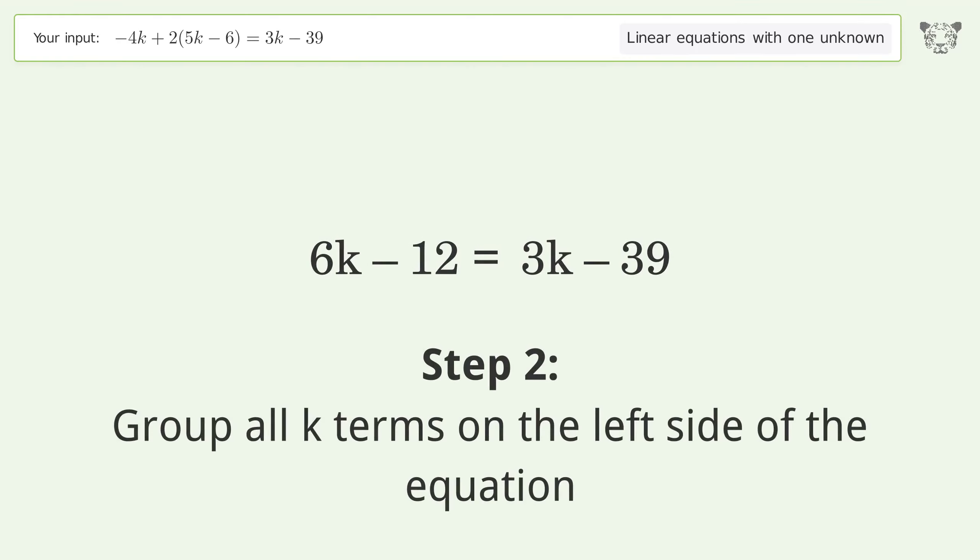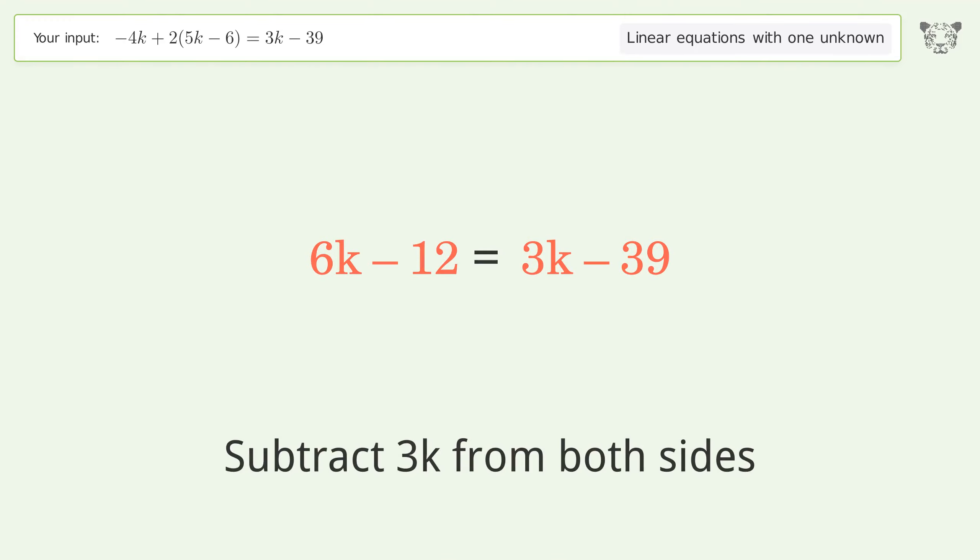Group all k terms on the left side of the equation. Subtract 3k from both sides.